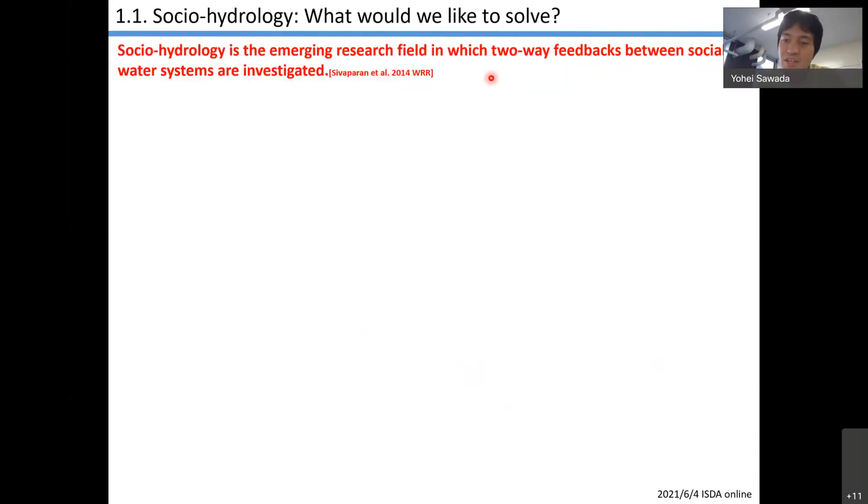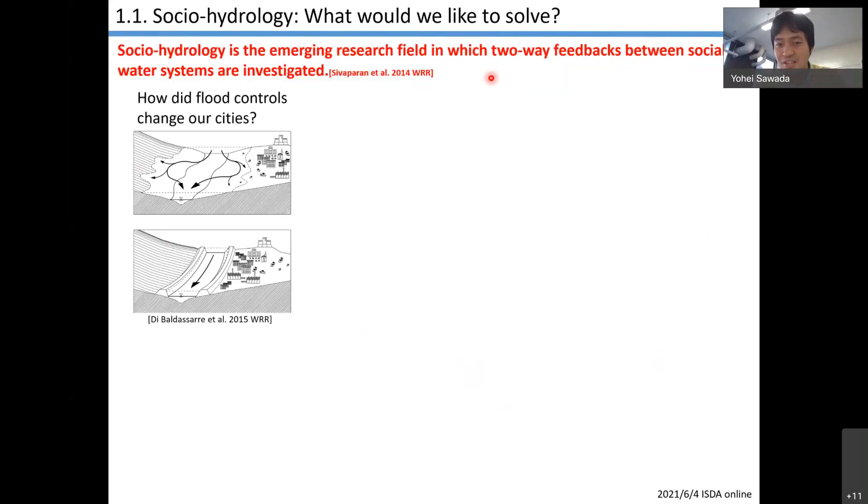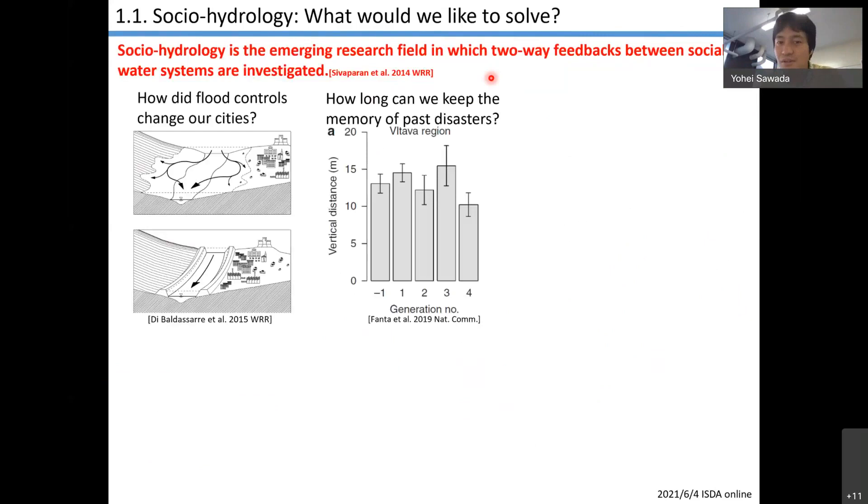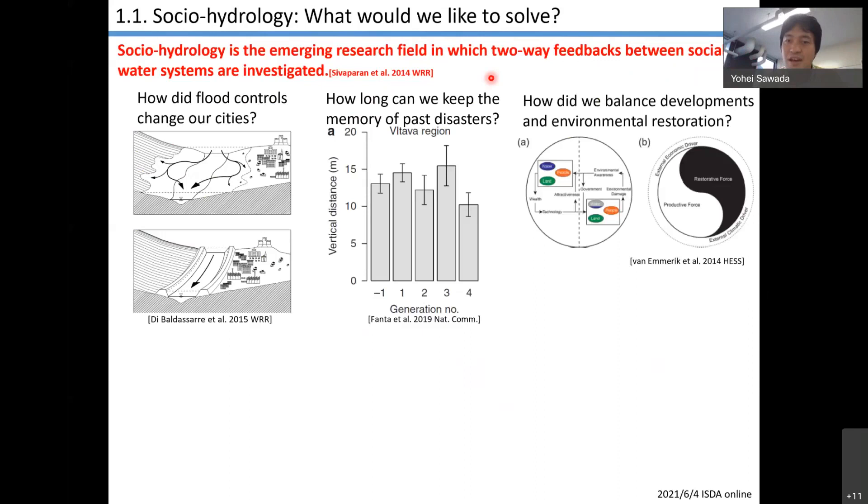There are many interesting and important research questions in socio-hydrology. For instance, how did flood controls change our cities? And how did these changes to our cities change the flood control and water cycles? How long can we keep the memory of past disasters? And how did we balance between development and environment restoration? It is always a really debatable topic in environmental management.